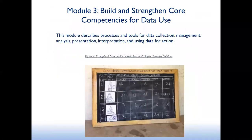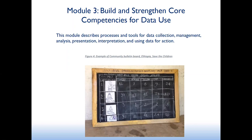Module three, Building and Strengthening Core Competencies for Data Use, describes processes and tools for data collection, management, analysis, presentation, interpretation, and using data for action. An example shown is a community bulletin board from Save the Children's work in Ethiopia. We highlight data visualization as a powerful way to build capacity for data analysis, presentation, interpretation, and use. Jerome's presentation includes dashboards and review meetings at the community level — this module has more examples of those and their related processes.